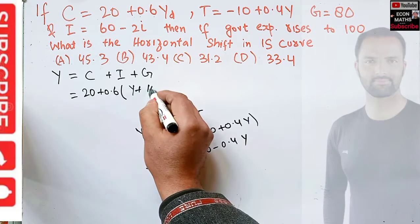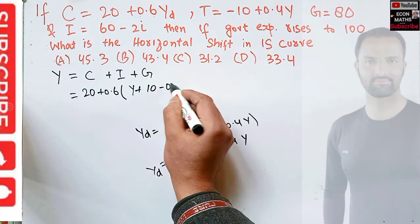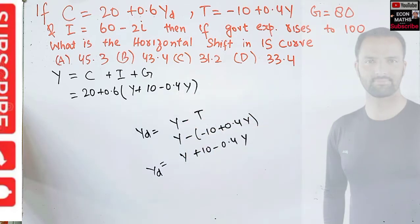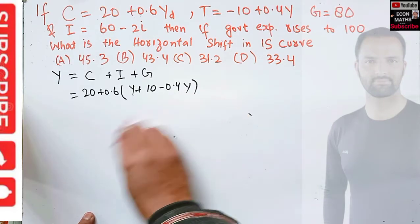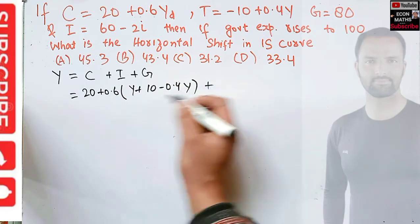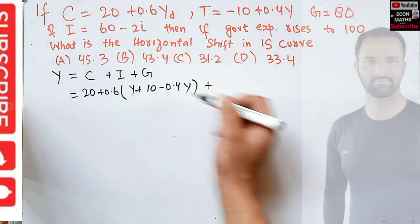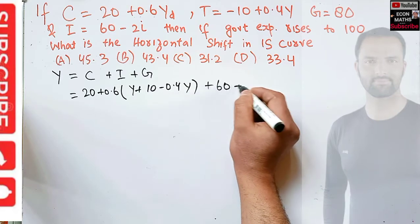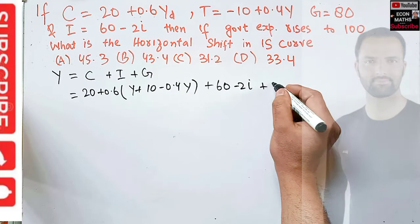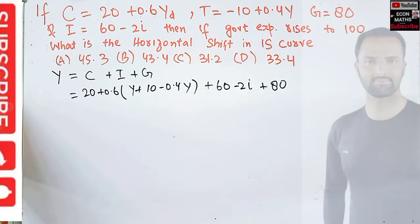In place of Y_D, I can write Y + 10 - 0.4Y. Then we have the value of I which is 60 - 2i, and government expenditure is 80 originally.